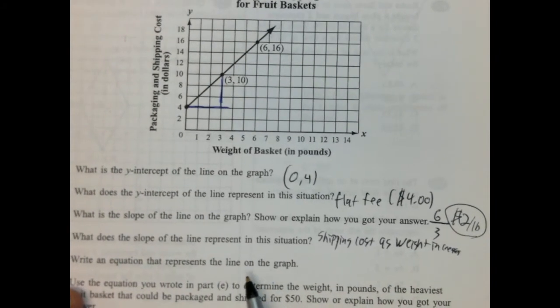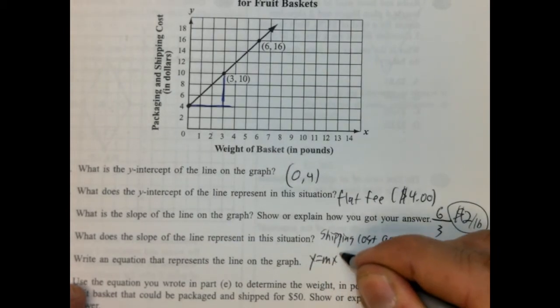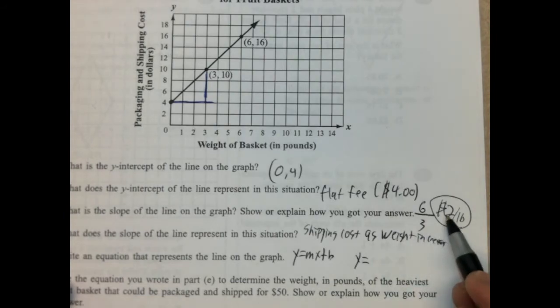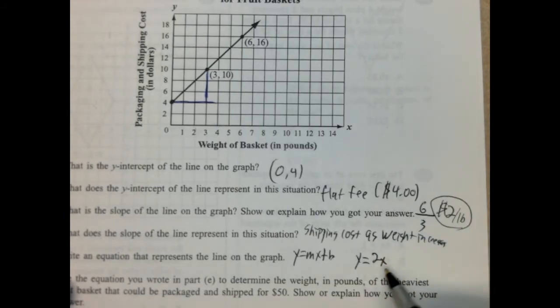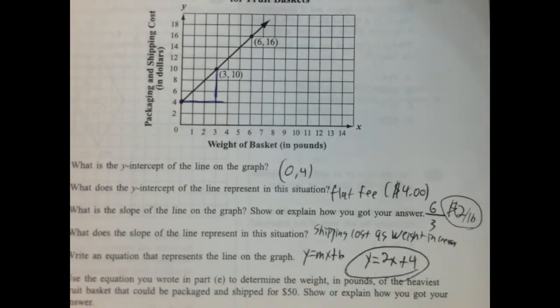Write an equation that best represents the line of the graph. Alright, so Y equals MX plus B. So Y equals our rate of change is M, so it's 2X. And our B is our Y-intercept, which in this case is 4. So 2X plus 4. Alright?